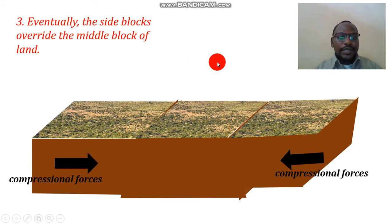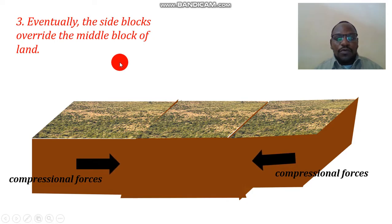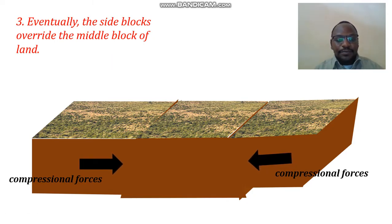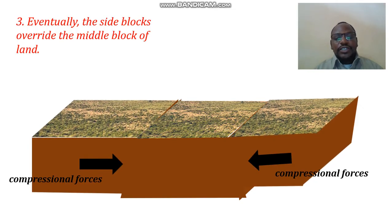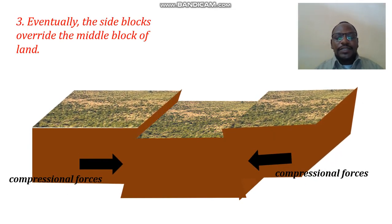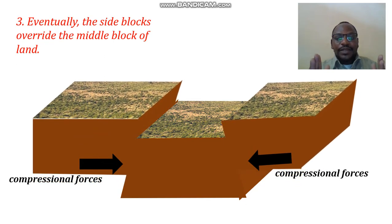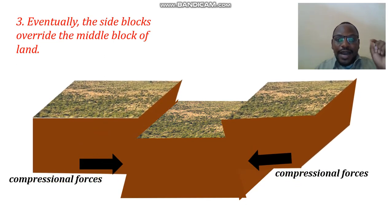What do we expect to happen now — will the blocks move downward or upward? We have the side blocks which are forced to move over the middle block. The middle block remains constant while the side blocks are the ones moving upwards, and we have the rift valley being formed.